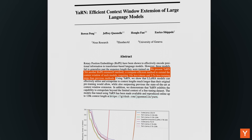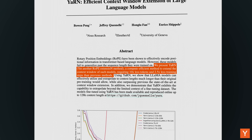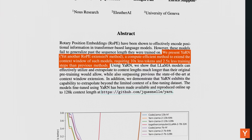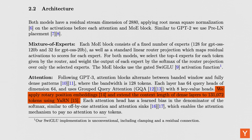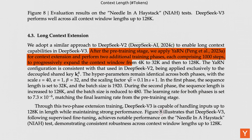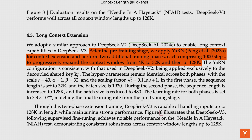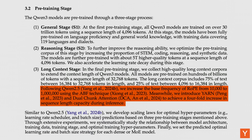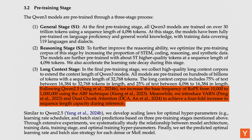One of the most interesting technical differences lies in how each model extends its context length. YARN (Yet Another RoPE Extension) is a technique for stretching the model's rotary positional embeddings to handle far longer sequences than it was originally trained on. GPT-OSS applies YARN right from pre-training, so its weights have learned to work natively with 131,000 token contexts. DeepSeek takes a staged approach — fine-tuning after pre-training to first reach 32,000 tokens, then further training to achieve 128,000. Qwen also fine-tunes to 32,000, but at inference time applies YARN scaling again, increasing the RoPE base frequency by a factor of four to reach 128,000 tokens without extra retraining.